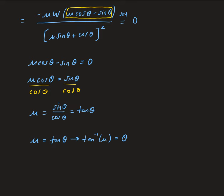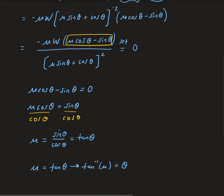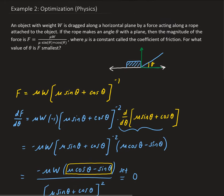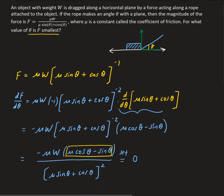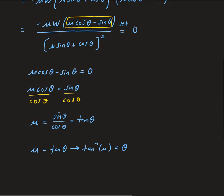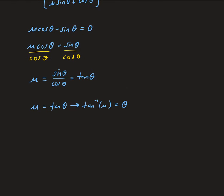Now we need to determine whether this critical point is a relative minimum or relative maximum. Remember, in the problem we're asked for what value of theta is the force the smallest. At this point we're not sure yet if this will provide the smallest force, so we need to apply the first derivative test.